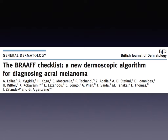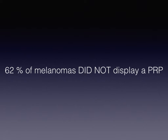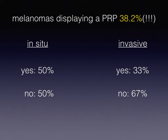As we found in this large multicentric study that we recently conducted, only 38% of melanomas display a parallel ridge pattern. This means that 62% of melanomas do not display a parallel ridge pattern, putting us at risk of missing several melanomas if we consider only the parallel ridge pattern as a melanoma criterion. This is true both for in situ and invasive tumors, as 50% or more of melanomas do not display a parallel ridge pattern.